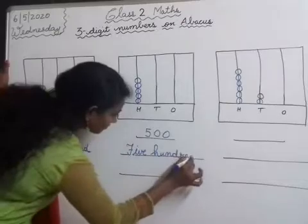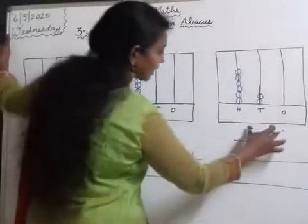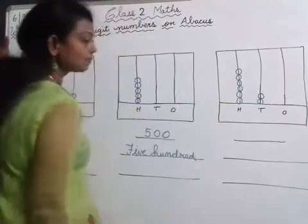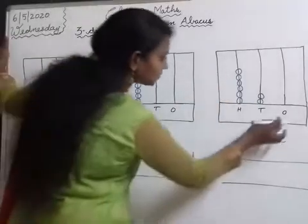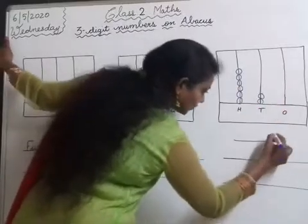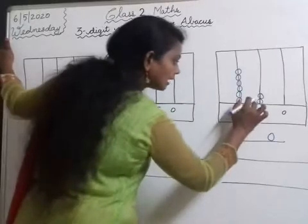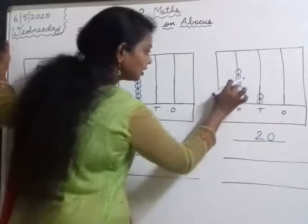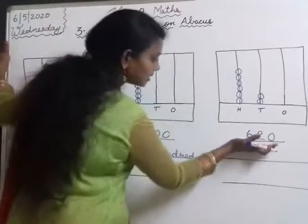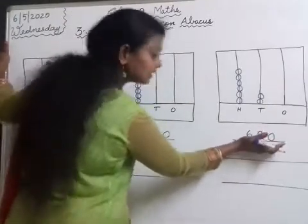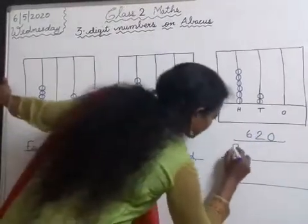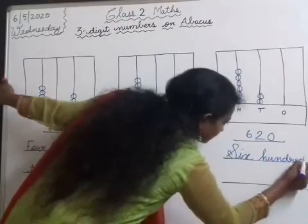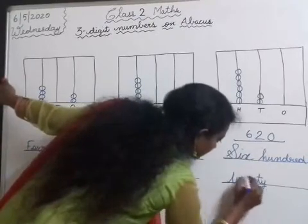Next, see this Abacus. In the 1s place, there are no balls. In the 10s place, they have given some balls. In the 100s place also, they have given some balls. Now we have to write the number, starting with the 1s place — no balls, so write 0. In the 10s place, how many balls are there? 2. In the 100s place, how many balls are there? 6. So the number is 620. Now we have to write the number name — six hundred and twenty, 620.